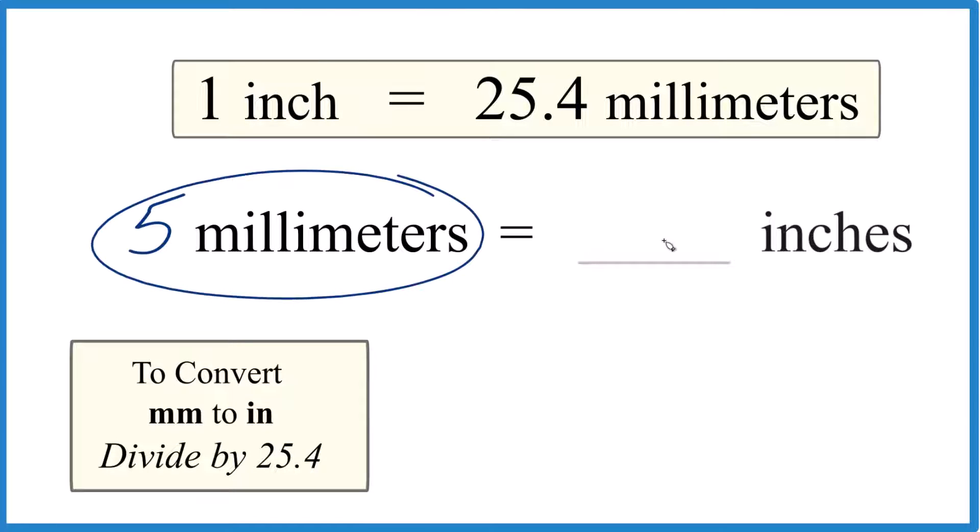Let's take five millimeters and get that to inches. Here's how you do it. When you're going from millimeters to inches, you just divide by 25.4. That's because there are 25.4 millimeters in one inch. That's our conversion factor.